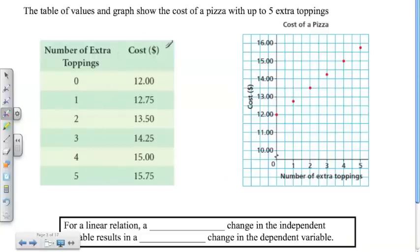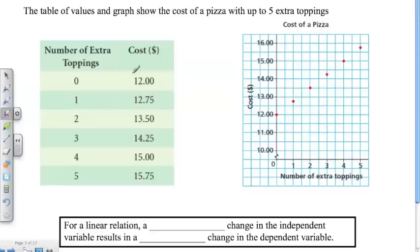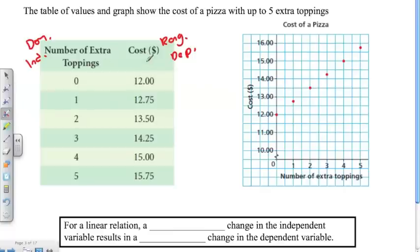Now let's apply this to this example. The table of values and graph show the cost of a pizza with up to five extra toppings. Here we have our table with number of extra toppings going up from zero to five, and the cost of the pizza as it relates to the number of toppings. You should already know that the toppings column is the domain, and the cost is the range. Another way to say that is this is the independent variable, and this is the dependent variable.